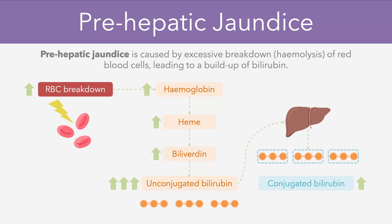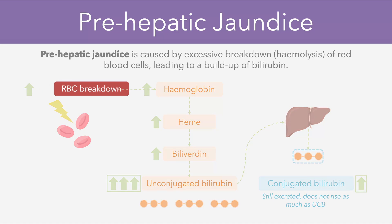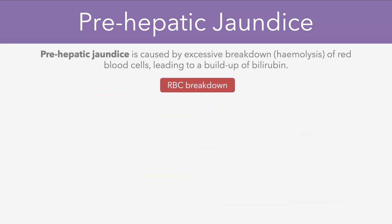However, the main difference is that the conjugated bilirubin can still be excreted, so it doesn't rise as much as the unconjugated bilirubin. To summarize, in a pre-hepatic jaundice we get a significant rise in the unconjugated bilirubin levels, and a normal or slightly elevated conjugated bilirubin. So what are the possible causes of red blood cell breakdown in a pre-hepatic jaundice?